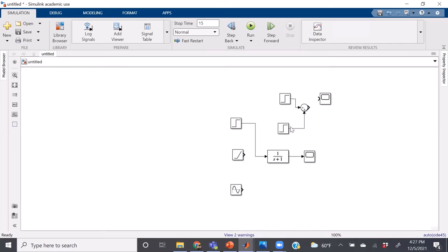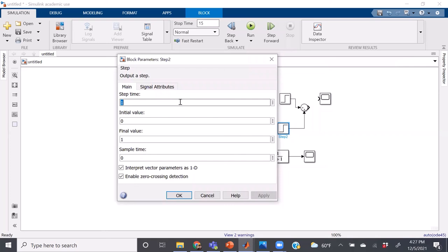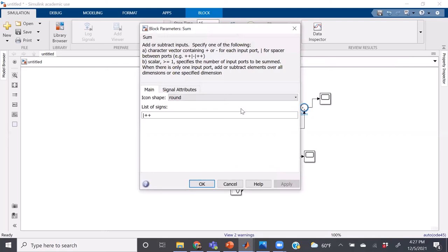And we're going to make this an identical step change, but we're going to make this at time 10. Initial value of 0, final value of 5.